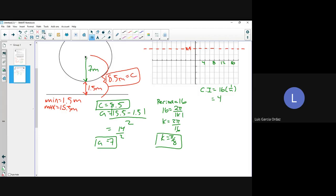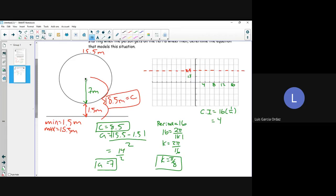So this is going to be 1.5 right here. And the top one is going to be 15.5. So we have our c. We have our a. We have our k.